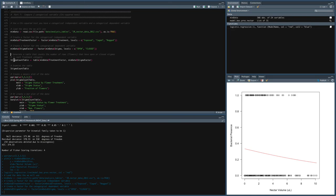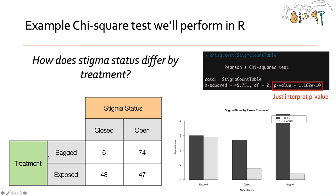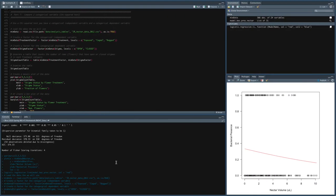Now, what we need to do is generate a table that counts the number of rows, flowers that have open and closed stigma in each treatment. So that is, just getting back to our slides here, that is this. We need to generate this count table.